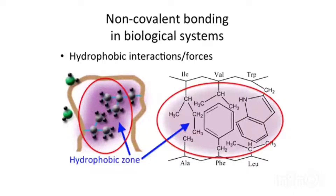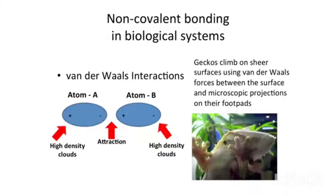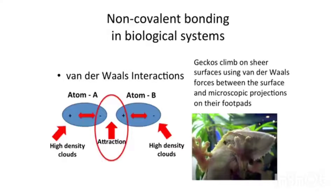Finally, there are van der Waals interactions. If you have two atoms, there will often be a polarization where there's a partial positive and a partial negative part in the atoms. That induces, in an adjacent atom, a similar polarization. Because one is partially negatively charged and the other is partially positively charged, you end up with an attraction between the two atoms. These forces, while very, very small, can add up.